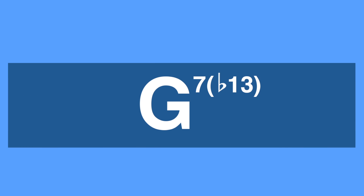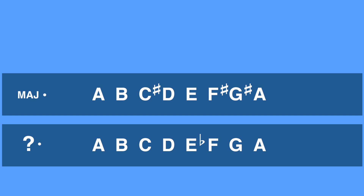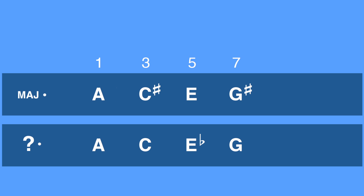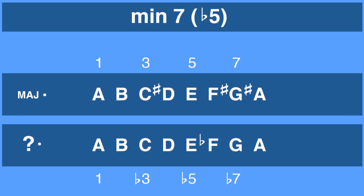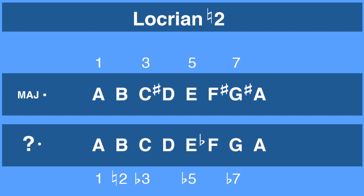Only two more modes left. The next mode is the sixth mode of the C jazz minor: A, B, C, D, E-flat, F, G, and A. A major is A, B, C-sharp, D, E, F-sharp, G-sharp, and A. Isolating the odd scale degrees, we get a flat third, flat fifth, and flat seventh. The chord associated with this scale is minor seven flat five. This scale is often used as the two chord of a minor two-five, which we will be covering in a later unit. This scale is called Locrian natural two.